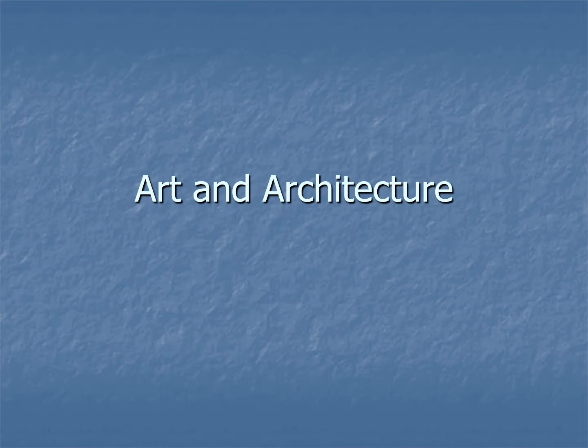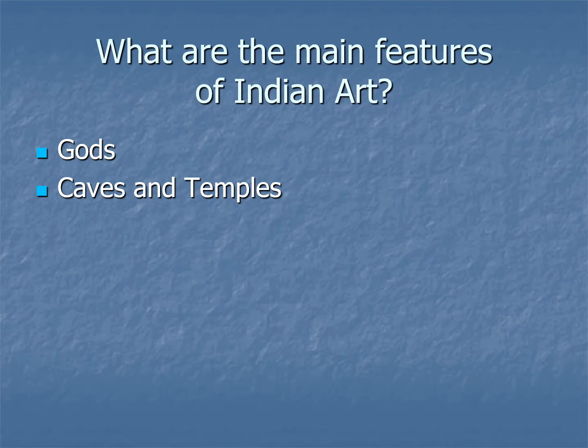Today we are going to be talking about early art and architecture in Indian history. The important features of Indian art in the early period are going to be related towards religion. We're going to first discuss Hindu gods and the role they play in Indian art, then look at early examples of temples carved directly out of stone in caves, and then the more common form of temples, which are the brick and mortar stone temples built above ground.